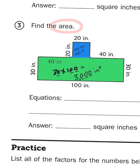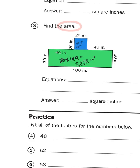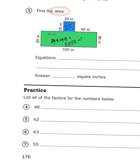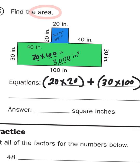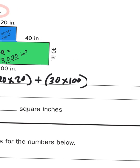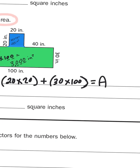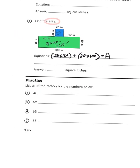And then you would just add those two amounts together. Okay, so your equation would be as follows. 20 times 20, and I'm going to put those in parentheses, plus 30 times 100. And that would give you your total area. And I'll let you do the calculations yourself. And that, my friends, is all there is to it.